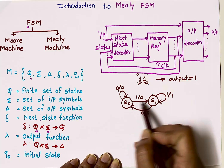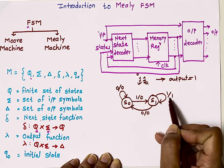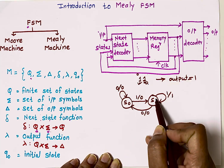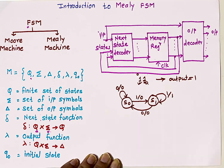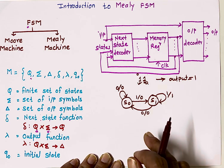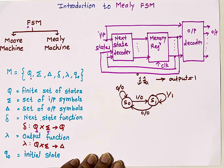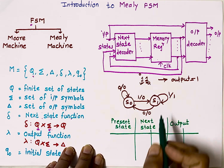In this way we draw a state diagram for Mealy FSM, where output depends on present state as well as present input.